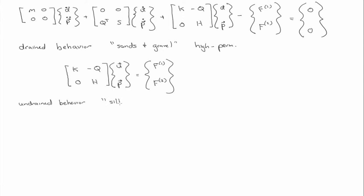So this would be silts, clays, low permeability. In this scenario, you assume that the material is nearly impermeable, such that the whole H matrix is zero and all of F2 is zero.